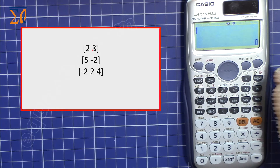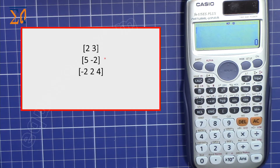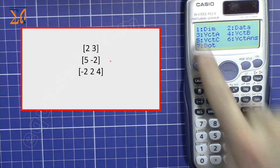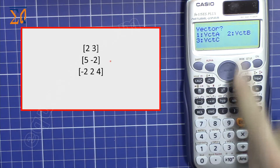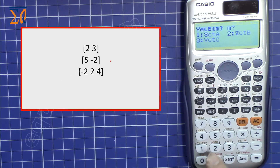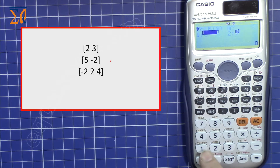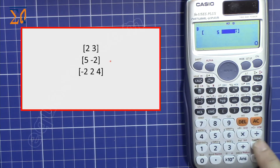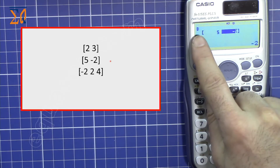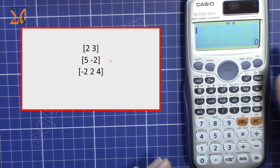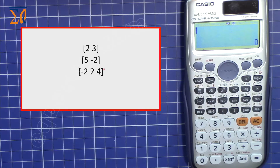Press AC to clear the screen. Now let's store the second vector into B. Press Shift, vector, one for dimension selection, then two for vector B. Choose dimension two, then enter five, equal, then minus two, equal. Vector B is now stored.